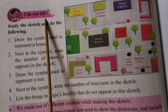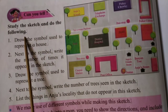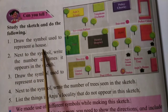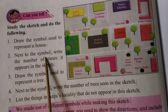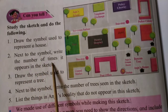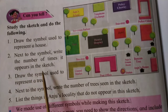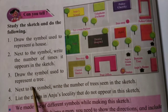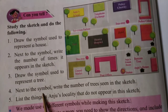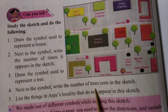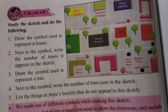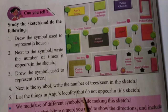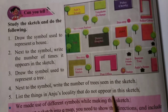Can you tell? Study the sketch and do the following. Draw the symbol used to represent a house, and next to the symbol write the number of times it appears in the sketch. Draw the symbol used to represent a tree, and next to the symbol write the number of trees seen in the sketch. List the things in Anju's locality that do not appear in this sketch.